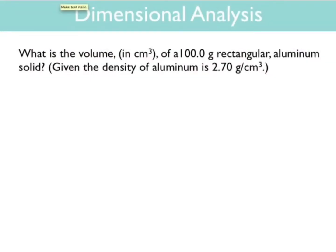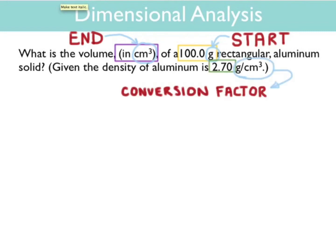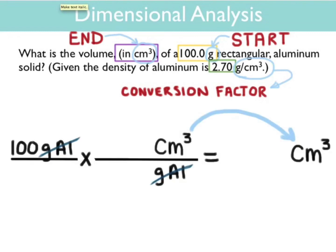Here's an example of a typical chemistry problem. What's the volume in centimeters cubed of a 100 gram rectangular aluminum solid, given the density of aluminum is 2.70 grams per cubic centimeter? Again, let's solve this using our units and we're going to start with the 100 grams. This is the number which has only a sole unit. Let's look at where we're trying to go. We're trying to end in cubic centimeters or the unit of volume, and we're given a conversion factor, the density, 2.70 grams per cubic centimeter.